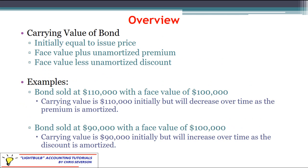So let's talk about the carrying value of the bond. Initially this carrying value is equal to the issue price itself. If the bond is sold at a premium, the issue price and therefore the carrying value will be higher than the par value — higher than that face value. In fact, it will be the face value plus any unamortized premium.